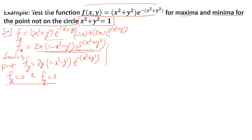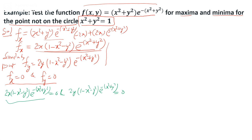Setting fx = 0 gives: 2x(1 - x² - y²)e^(x²+y²) = 0. From this equation we get either x = 0, or (1 - x² - y²) = 0. Note: we cannot set e^(x²+y²) = 0.